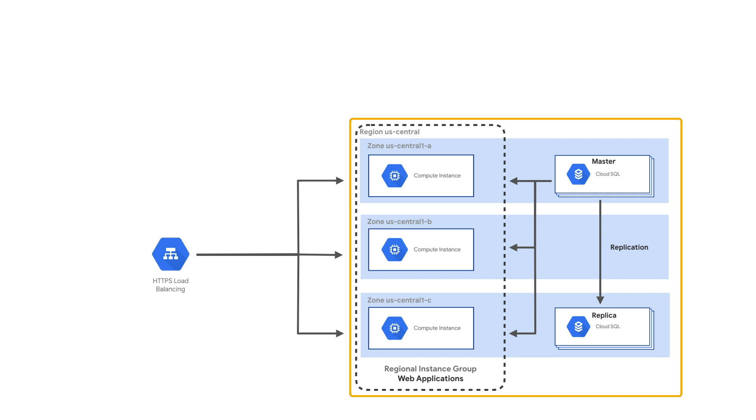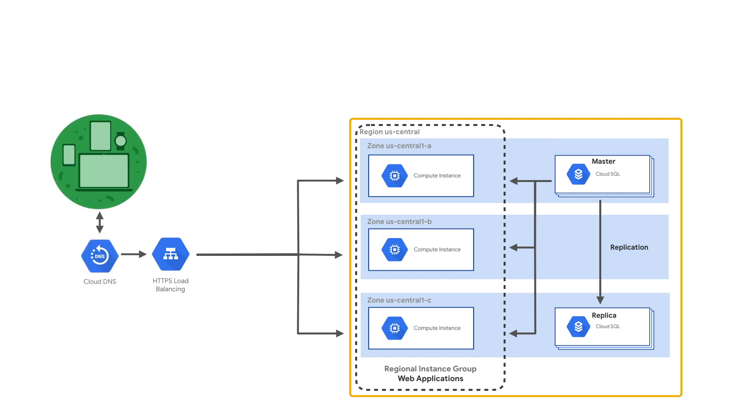they can promote the replica to become the master, and then finally configure Cloud DNS to point to the primary application.